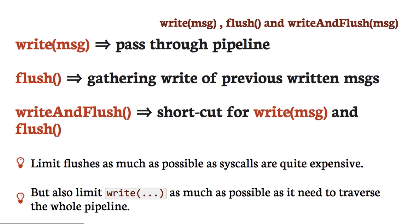We have write, which just moves through the pipeline; flush, which flushes everything not yet written to the socket; and write-and-flush as a shortcut. While it's a good idea to flush at some points, it's also good to remember that it's very expensive. What you can do with these methods is implement some kind of auto-flushing — for example, flush once the output buffer has one megabyte inside it, or when some threshold is hit. That's pretty easy to implement.